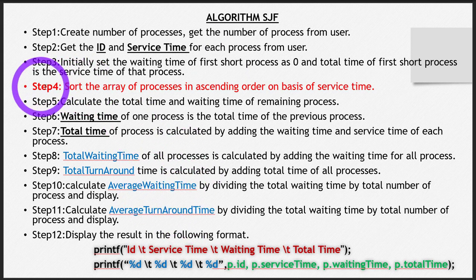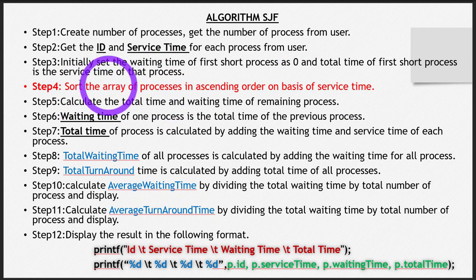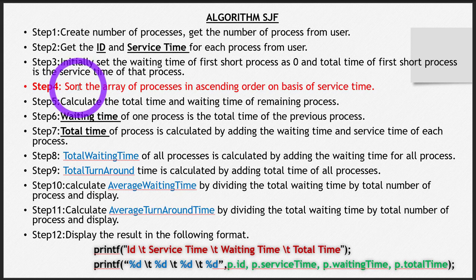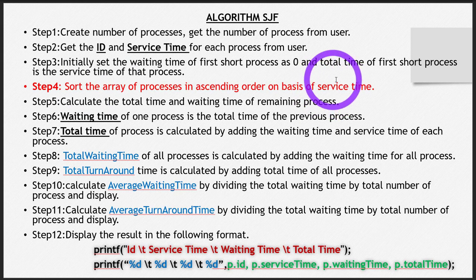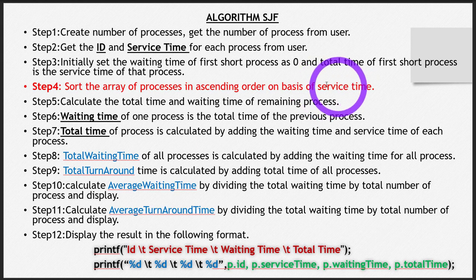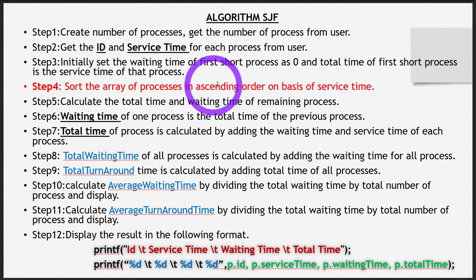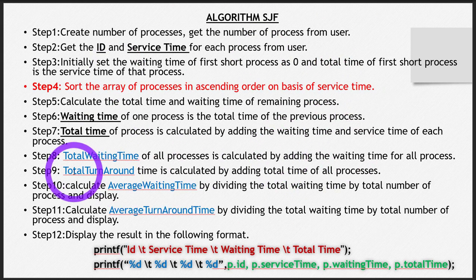The only difference is in step four: before calculating the total time and waiting time of the processes, you have to sort the array. Since this is SJF — Shortest Job First — you sort the array by service time in ascending order, so that whichever process has the least service time will be executed first. This is just two or three lines of code; you can use bubble sort here. The rest of the code is exactly the same.